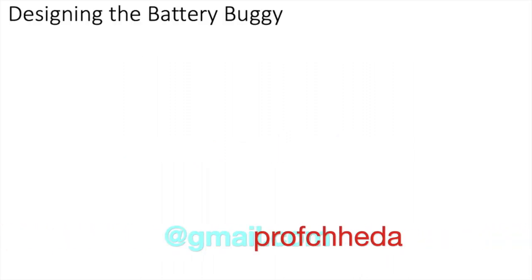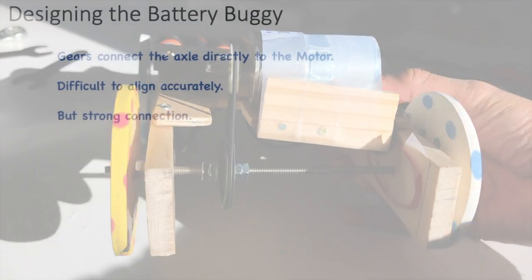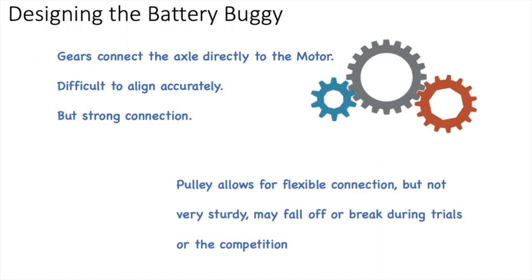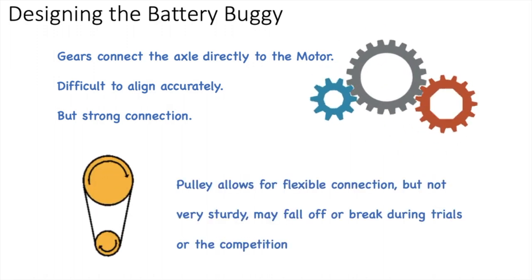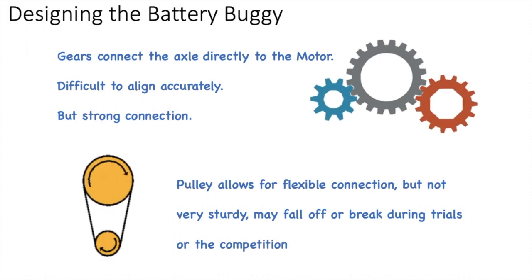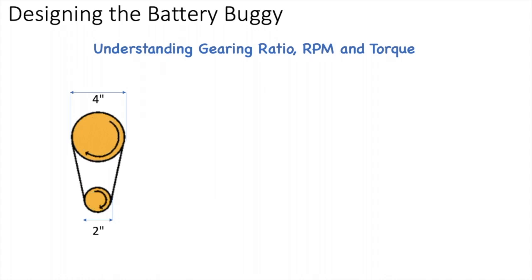Hey guys, in this video I wanted to cover more detail about gears and pulleys. Gears connect to the motor, align really well, and provide a really strong connection. Pulleys, on the other hand, provide a flexible connection—they're not very sturdy and may fall off or break. Anyway, let's understand a little bit more about the gearing ratios, RPM, and torque.